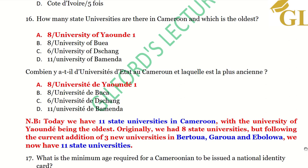This particular question was set last year. Before this question was set, there were eight state universities in Cameroon, and the University of Yaounde I was the oldest at that time — and it's still the oldest. But something has changed about the number of universities.